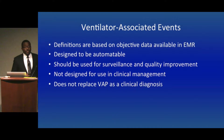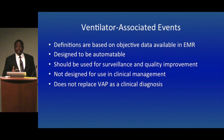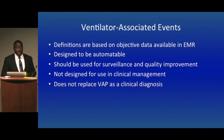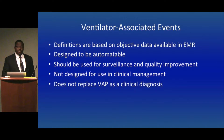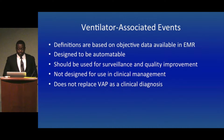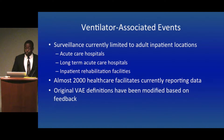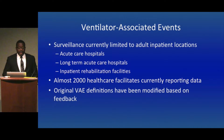The VAE definitions are based on objective data that can be obtained directly from the electronic medical record, and were specifically designed so that the process of surveillance could be automated. The VAE metric should be used for surveillance and quality improvement — it was not designed for clinical management of patients, and VAE does not replace VAP as a clinical diagnosis. Surveillance is currently limited to adult inpatient locations, and almost 2,000 healthcare facilities are now reporting data. Based on their feedback, the original VAE definitions have been modified and improved.